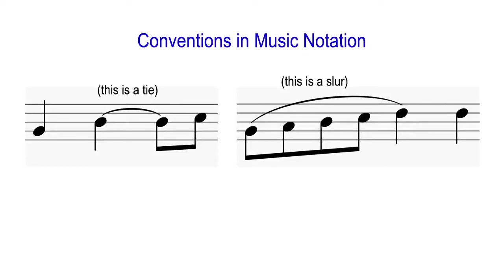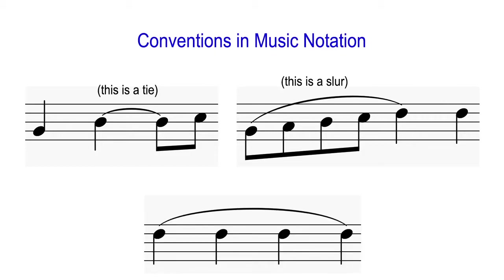Before we get to the next example, there are a few things about notating ties and slurs that we need to clarify. A tie connects two notes that are the same into a long note, while a slur connects two or more notes intended to be played smoothly in a legato manner regardless of their beat values. Suppose we see a curve line over several notes that are the same — is this a tie or a slur? When you put a curve above or below more than two notes, it is considered a slur.